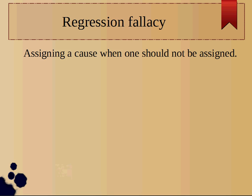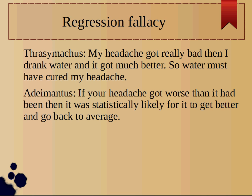The regression fallacy occurs whenever someone assigns a cause to something when a cause should not be assigned. Now this one's actually one you have to be a little bit careful with, because you could argue that everything has a cause, which is true, everything does have a cause, but you'll see in the examples what this regression fallacy actually refers to.